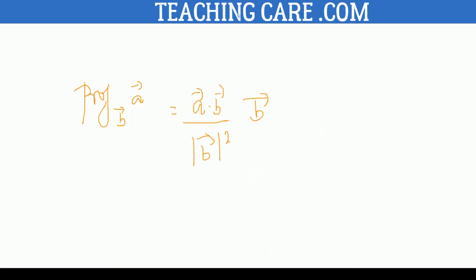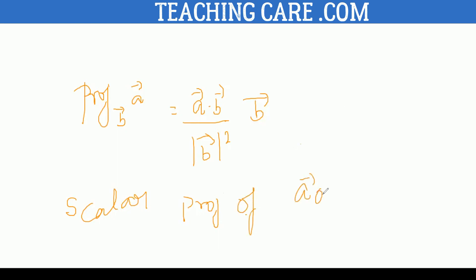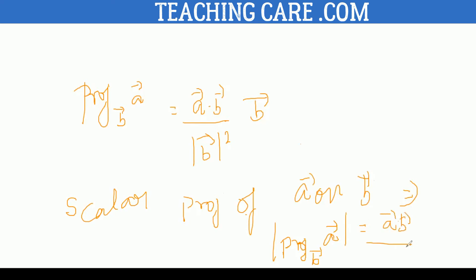Scalar projection means we are mainly concentrating on the magnitude — that is the magnitude of the vector projection. So the scalar projection of A vector on B vector is nothing but the absolute value of A dot B, divided by the absolute value of B vector.